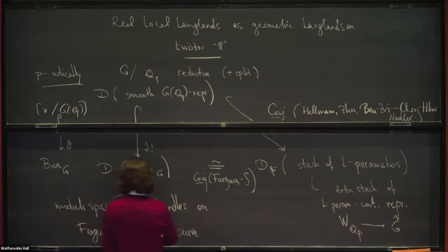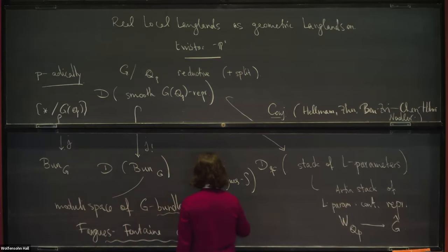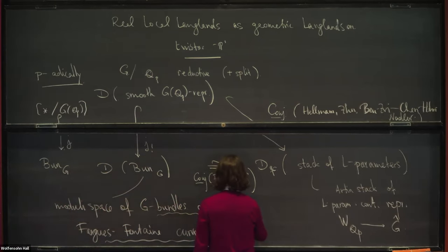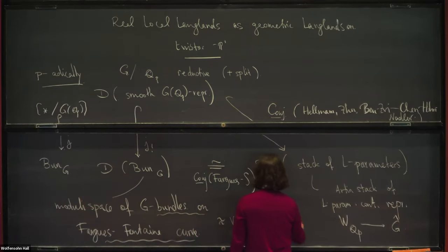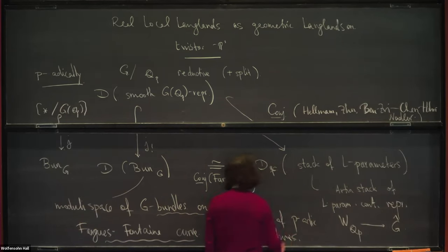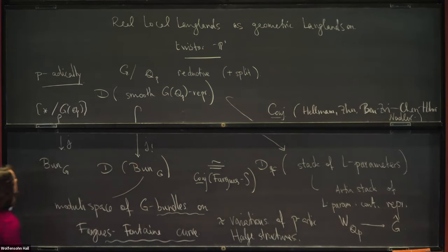Bundles on the Fargues-Fontaine curve basically give you some notion of a variation of p-adic Hodge structures. So this whole picture is related to the theory of variations of p-adic Hodge structures.